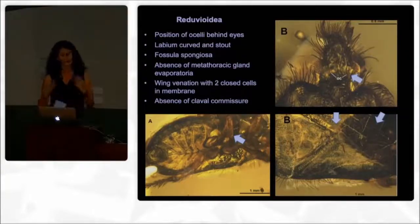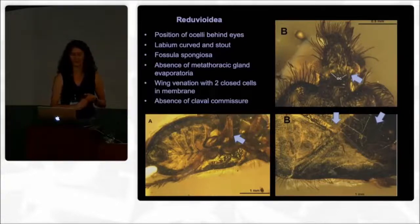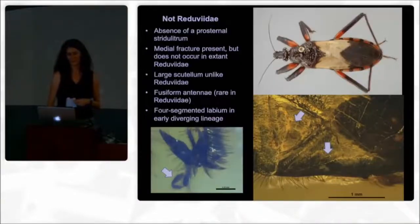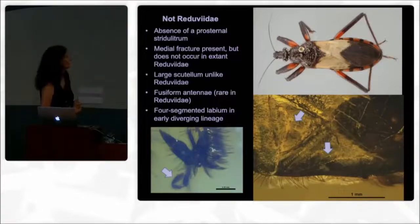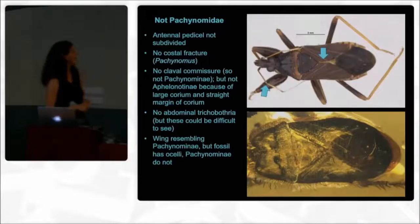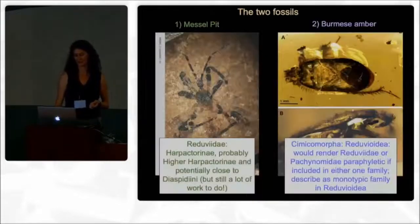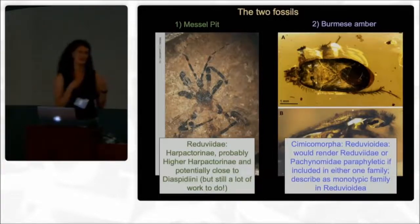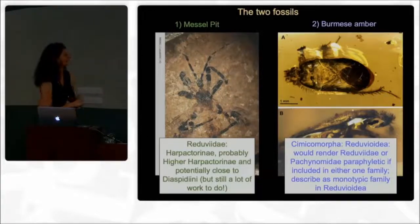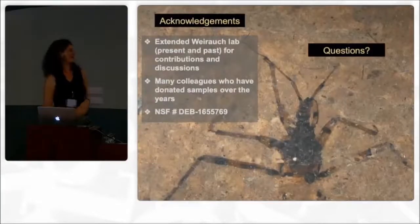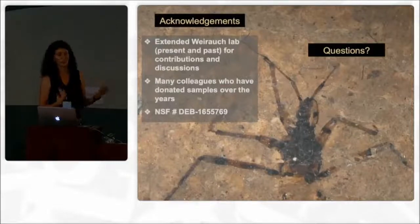The combination of characters that make it a Reduvioid is quite long. The position of the ocelli behind the eyes is one of the more critical and easy-to-see ones, but there are also features in the wing venation. It's not a Reduvioid for sure — there's no post-denal sclerite and other features are absent. Same for Pachynomidae: there's just not enough evidence to place it there due to internal structure and wing venation. In conclusion, we're now more confident it's a Ximicomorphin and a Reduvioid, and we will describe it as a monotypic family within the Reduvioidia based on the data we have. I would like to thank all my collaborators and you for your attention.